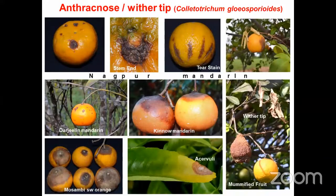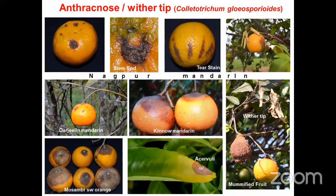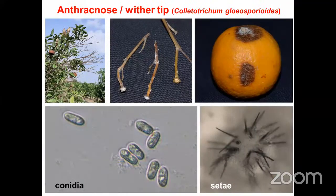Another important disease is anthracnose, caused by fungi like Colletotrichum gloeosporioides. Different infection levels can be seen in Nagpur mandarin, Darjeeling mandarin, Pinot mandarin, and Mosambi sweet orange. In severe infection it causes wilting, and mummified fruits can be seen. Colletotrichum gloeosporioides is also responsible for fruit drop.